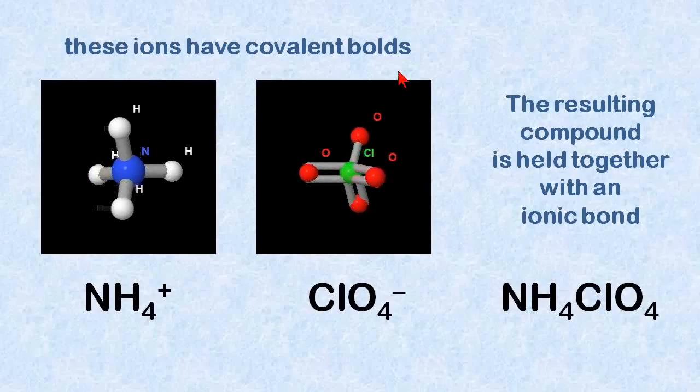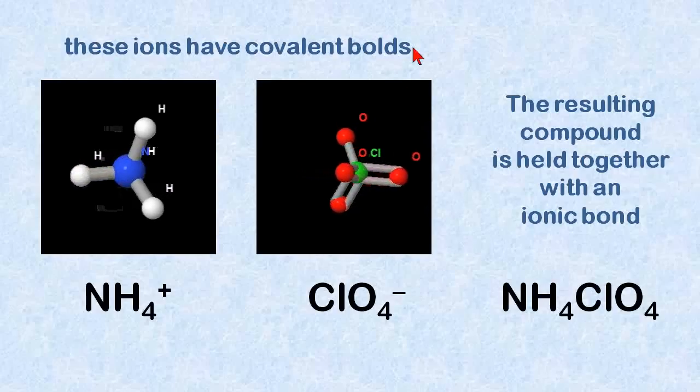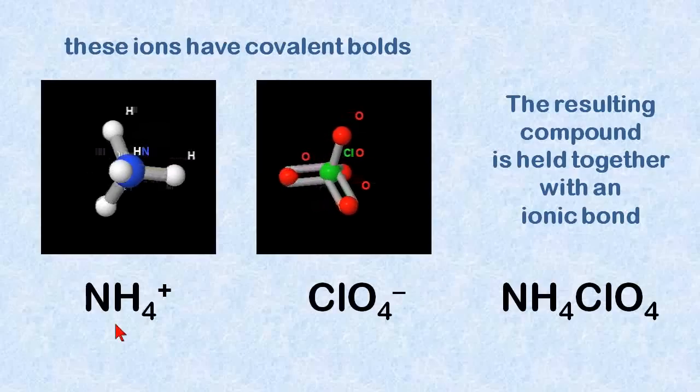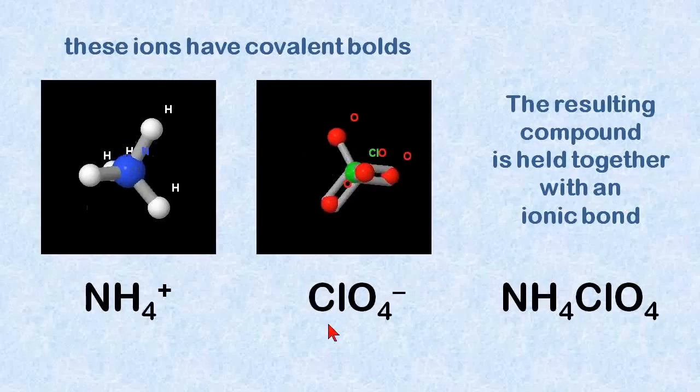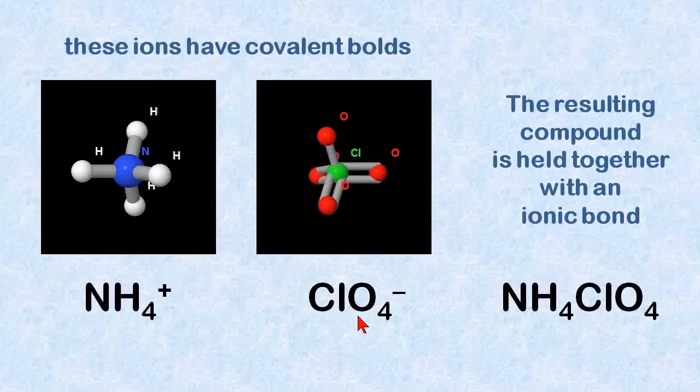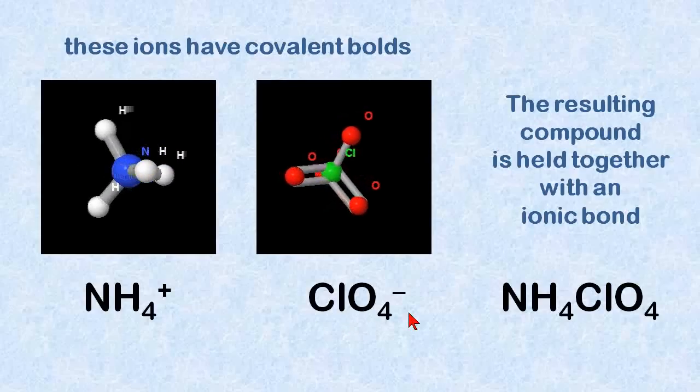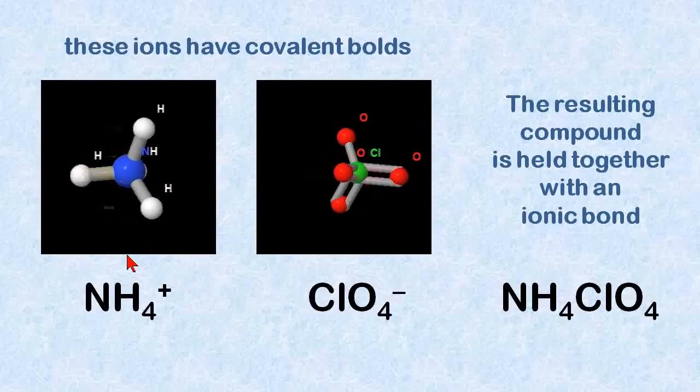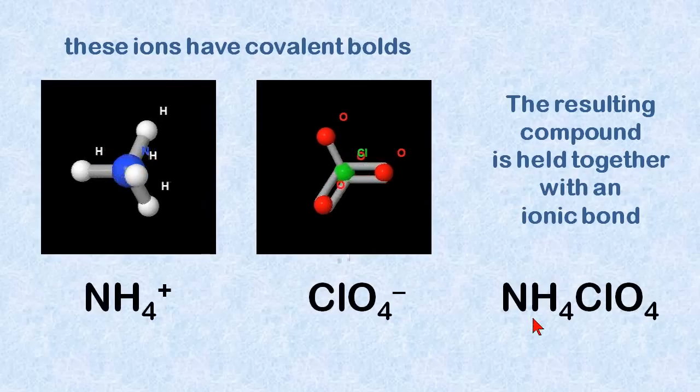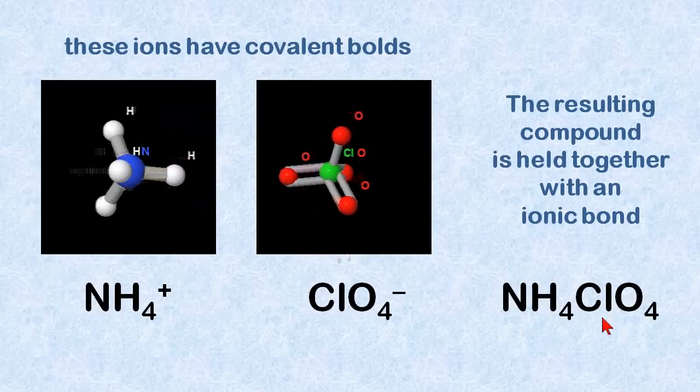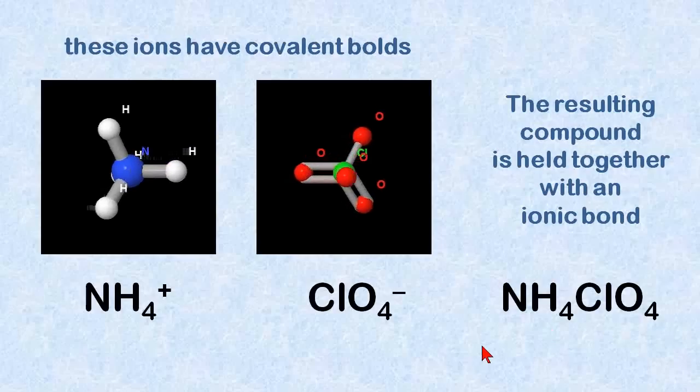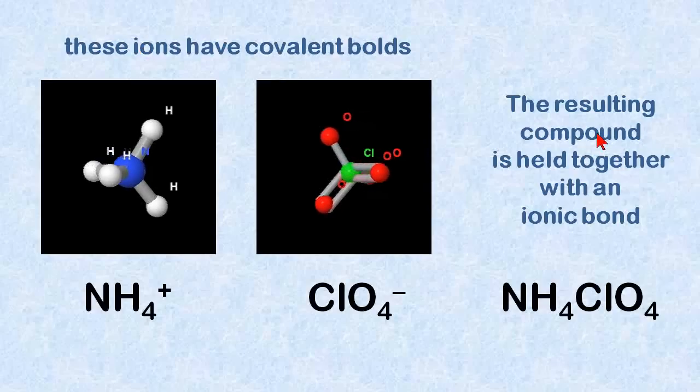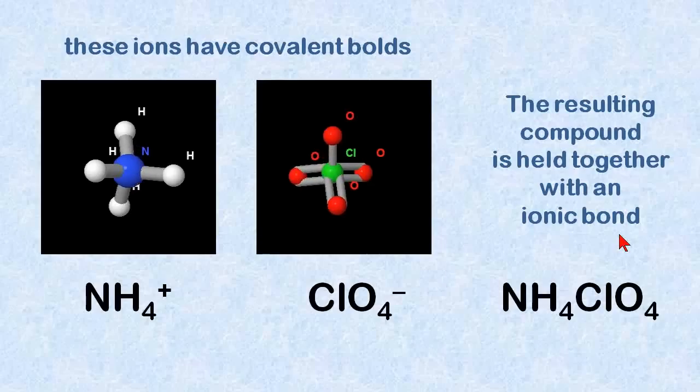Some of these polyatomic ions, if you take a look at your periodic chart of ions, you can find these two compounds. You should be familiar with ammonium, and this is perchlorate. This has a positive charge, this is a negative charge. These are both covalently bonded compounds, and they're going to get together to form an ionic bond between the two of them. These ions have covalent bonds, but the resulting compound is held together with an ionic bond.